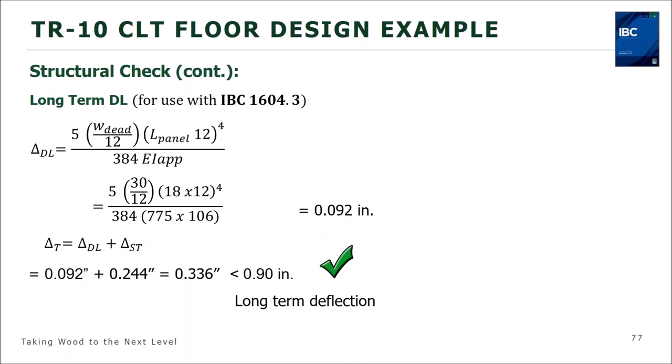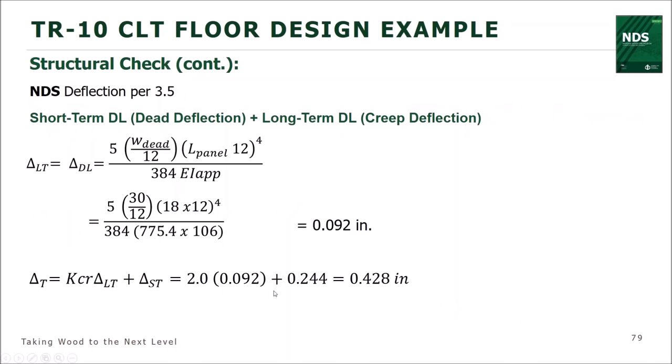We obtain our fire design estimate using the PRG 320 tables for three-lamination CLT. Using the applicable adjustment factors in NDS Chapter 16 and the ultimate strength K-factor of 2.85, we get a capacity of 5,785 lb-ft/ft, which is greater than our demand. The loads used for comparison are the actual dead plus live loads used in the structural design. So we're good to go. Adam's design example using the Woodworks software will actually use the net section rather than the simplified three-lamination approach.